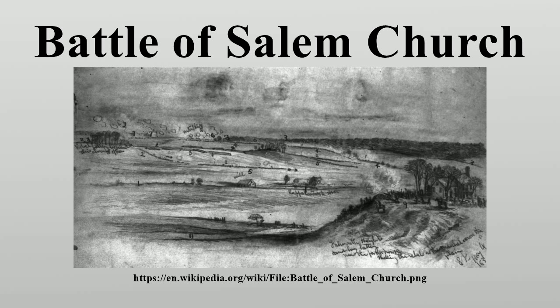After occupying Mary's Heights on May 3, following the Second Battle of Fredericksburg, Maj. Gen. John Sedgwick's VI Corps of about 23,000 men marched out on the Orange Plank Road with the objective of reaching his superior Maj. Gen. Joseph Hooker's force at Chancellorsville. He was delayed by Brig. Gen. Cadmus M. Wilcox's Brigade of Maj. Gen. Jubal Early's force during the afternoon of May 3, before halting at Salem Church.